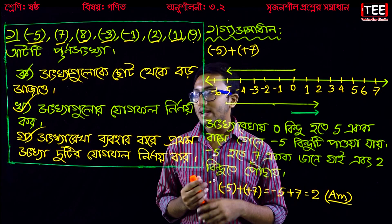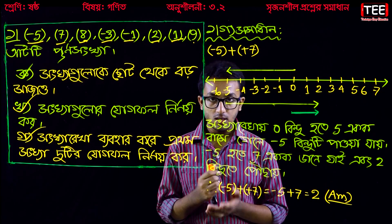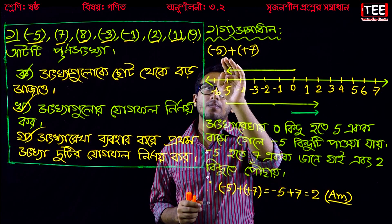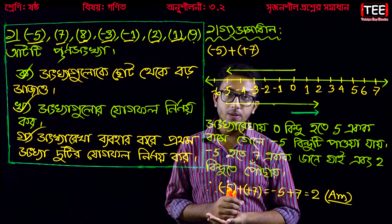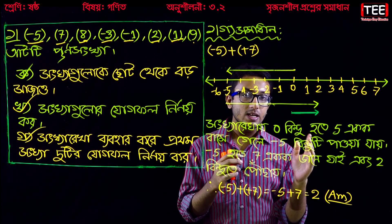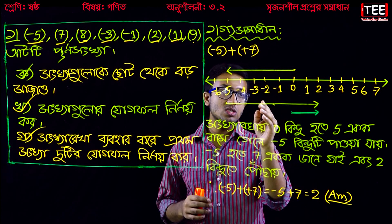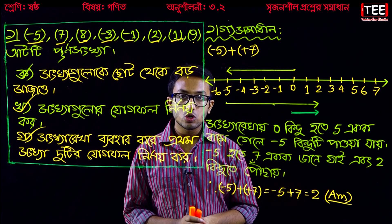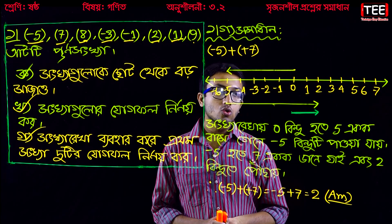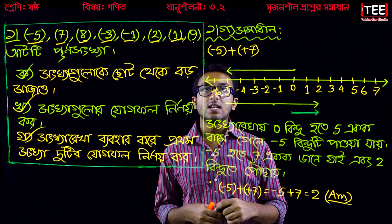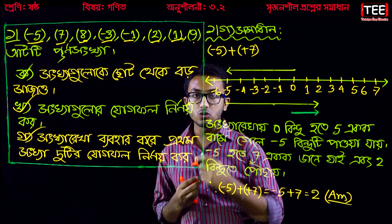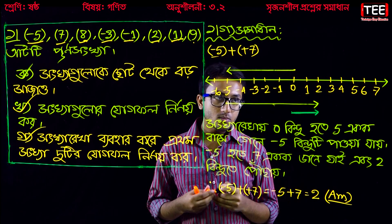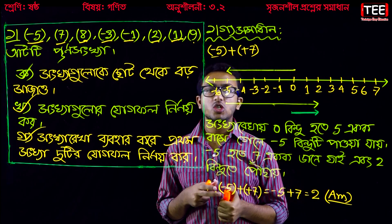The next one is minus 5, 7, and 7 is equal to 7. So we use minus 5 plus 7, we will put it here. As we can see, the first test is to apply for R. We can see the first test is minus 5. In the first test, you will see R.